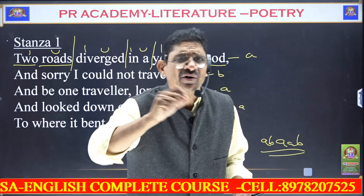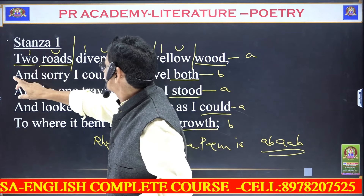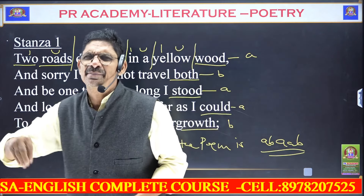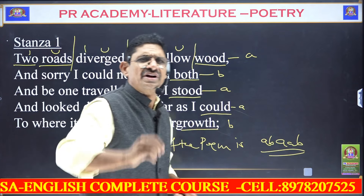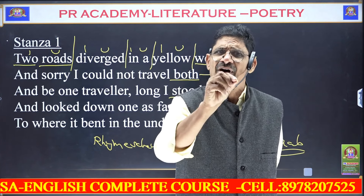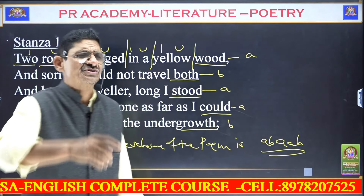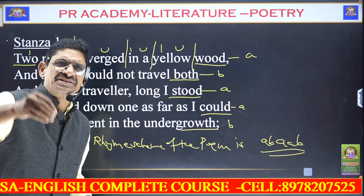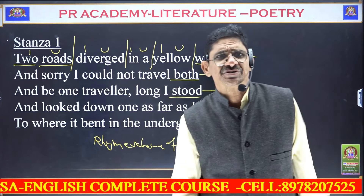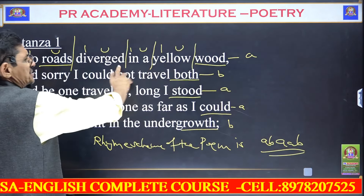An unstressed syllable followed by a stressed syllable is called an iamb. Four such iambic feet make iambic tetrameter. Even though there is an extra ninth syllable in some lines, the meter is still classified as iambic tetrameter.